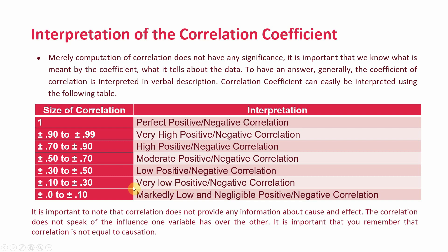To judge significance, you need the P value. It is very important to note that correlation does not provide any information about cause and effect — you should not establish causation just because of correlation analysis. For that, you should run other tests. The correlation does not speak of the influence of one variable on the other. Remember: correlation is not equal to causation.